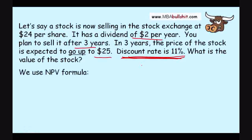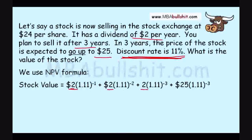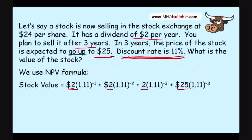We use the net present value formula. The stock value comes from your $2 dividend in the first year, plus your $2 in the second year, plus your $2 in the third year, plus the amount of money you will get in the future when you sell it — which we know is $25. Using the net present value formula, we have to discount or bring back the values of these cash flows to today.